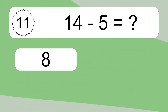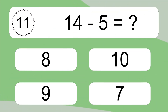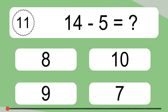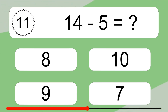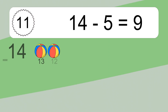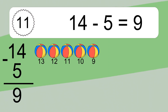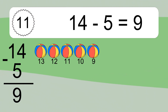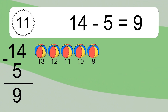14 minus 5 equals what? 14 minus 5 equals 9. Let's count it: 13, 12, 11, 10, 9.